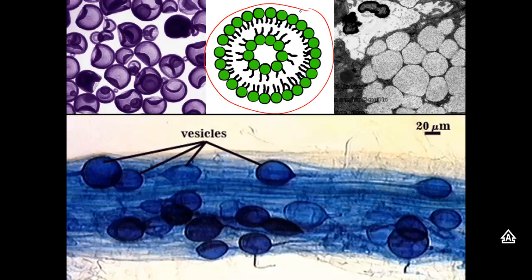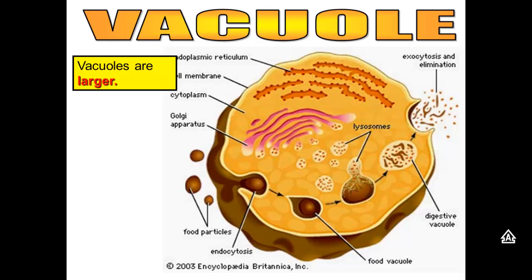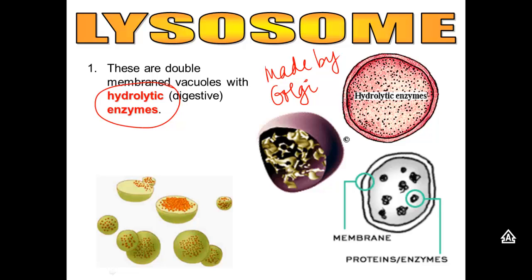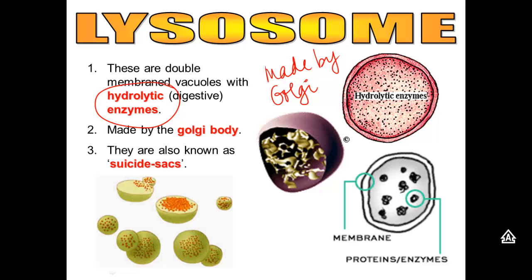Here is a picture of a vesicle — basically just a piece of the cell membrane with a double layer of phospholipids that can store things on the inside. A vacuole is just a much larger version of a vesicle, usually formed when we bring bigger things inside the cell. A lysosome is also a specialized vesicle, and the reason it's so special is because it stores digestive enzymes — which we call hydrolytic enzymes — inside it. The Golgi body makes the lysosomes.